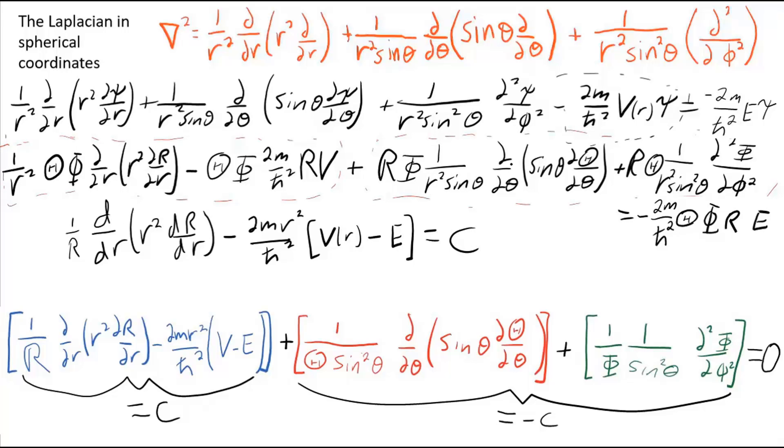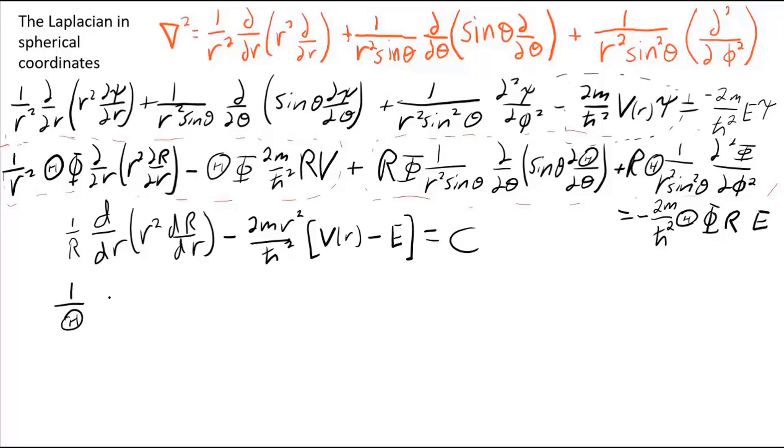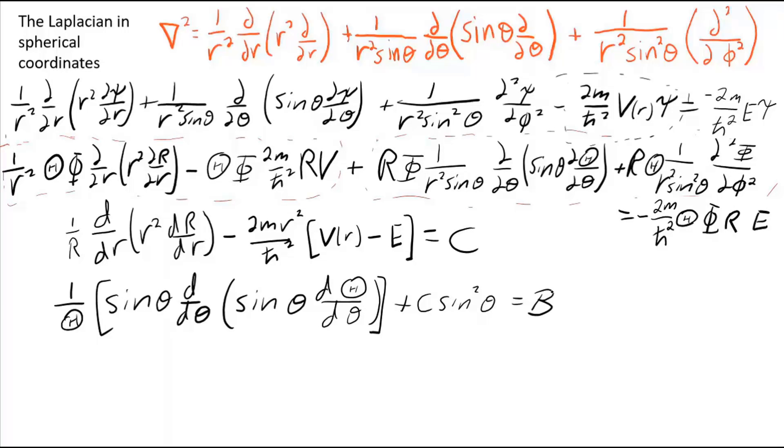Now the theta term and the phi term need to add up to a constant, which means the term that has only theta in it and the term that only has phi in it will need to add up to the same constant. Notice how I've dispensed with the partial derivatives now, because I'm going to have three equations, one for each variable, there's no more partial differentiation needed. And we'll call the constant B.